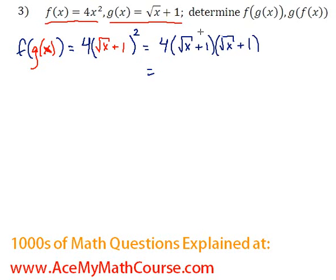So we're going to have to distribute this first. Root x times root x is just x, root x times 1 is root x. 1 times root x is just root x, and 1 times 1 is 1. Great.